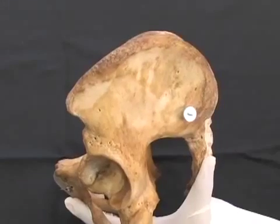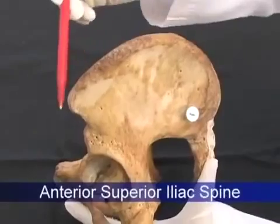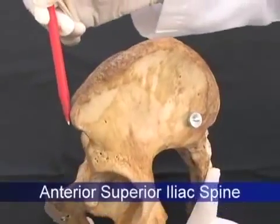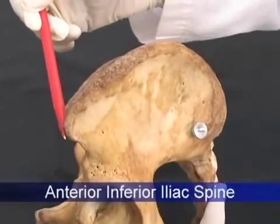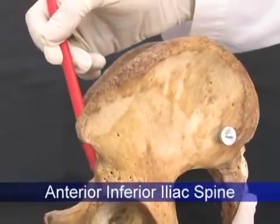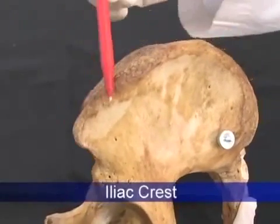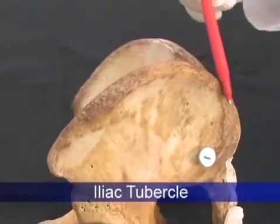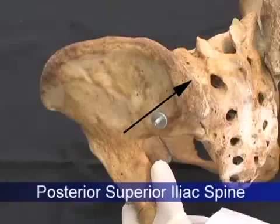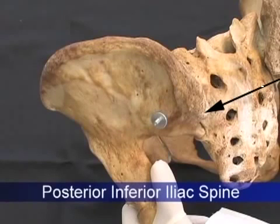On the ilium we can see the anterior superior iliac spine, anterior inferior iliac spine, iliac crest, iliac tubercle, posterior superior iliac spine, and the posterior inferior iliac spine.